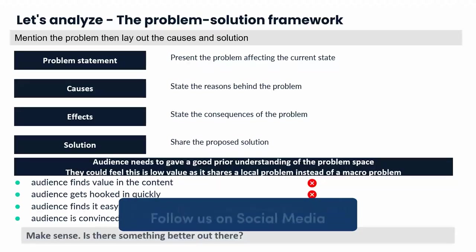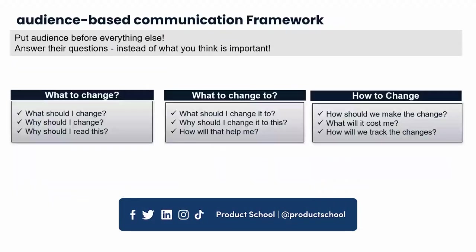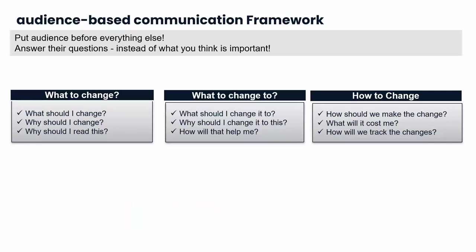At this stage, you may be thinking: does something better exist? Introducing an audience-based communication framework, where the value is in the audience. Let's put their understanding before everything else. To answer their questions in a seamless flow, a three-part framework has proven very effective: 'What to Change,' which clarifies reason-for-existence questions; 'What to Change To,' which introduces clarity on direction and how it will help the system; and 'How to Change,' which answers details around implementation and the cost to change. Full credit to the logic-thinking-processed TOC framework for introducing this way of thinking.